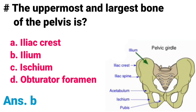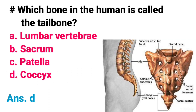The uppermost and largest bone of the pelvis is: A) Iliac crest, B) Ilium, C) Ischium, D) Obturator foramen. Correct answer is option B, Ilium. Ilium is the largest part of the hip bone and makes up the superior part of the acetabulum. So the ilium is the uppermost and largest bone of the pelvis.